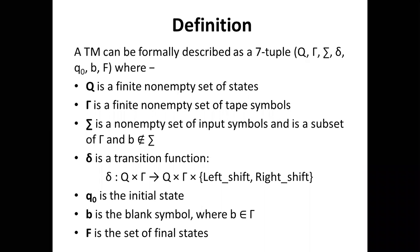The formal definition of a Turing machine can be described as a 7-tuple: Q, Γ, Σ, δ, q₀, b, F, where Q is a finite non-empty set of states.